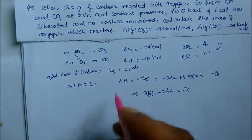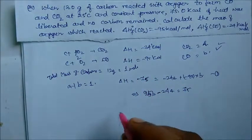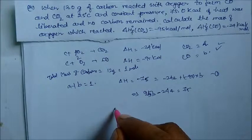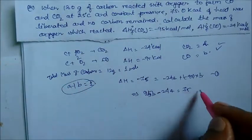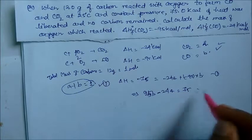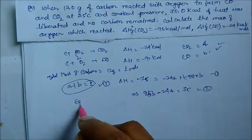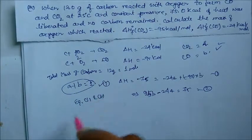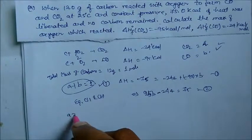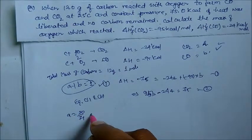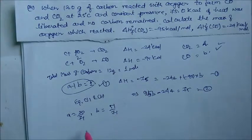Solving equation 1 and equation 2 simultaneously, we get A equals 20 by 71 and B equals 51 by 71.